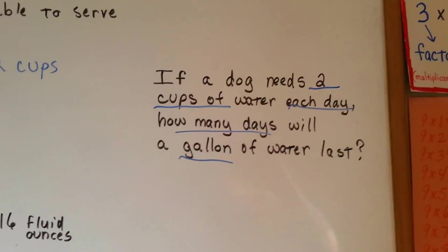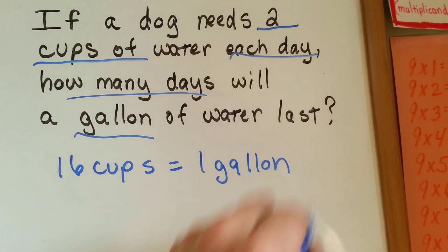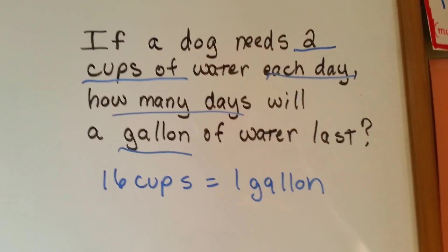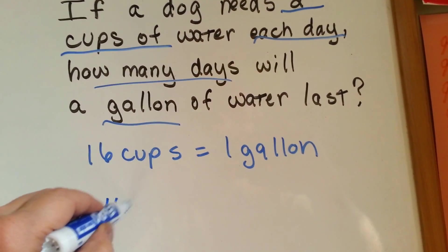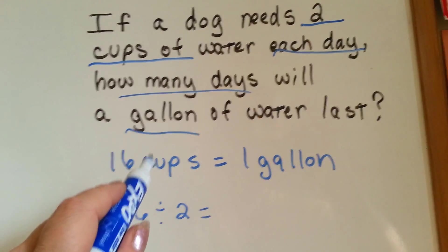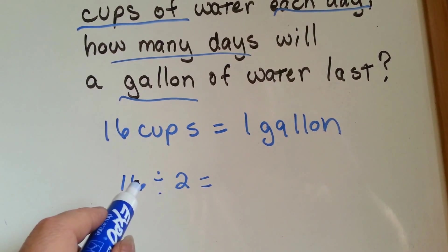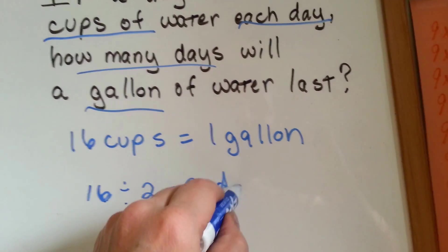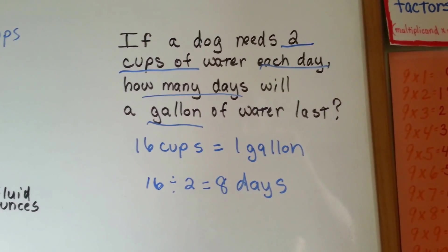So if sixteen cups equals one gallon and the dog drinks two cups a day, how do we split that up? Sixteen divided by two — because he drinks two cups a day, we split the sixteen into groups of two. How many twos are in sixteen, or what is half of sixteen? Sixteen divided by two is eight, because eight times two is sixteen. That means for eight days you would have enough water for your dog — if he drinks two cups a day and you have a gallon, it'll last eight days.